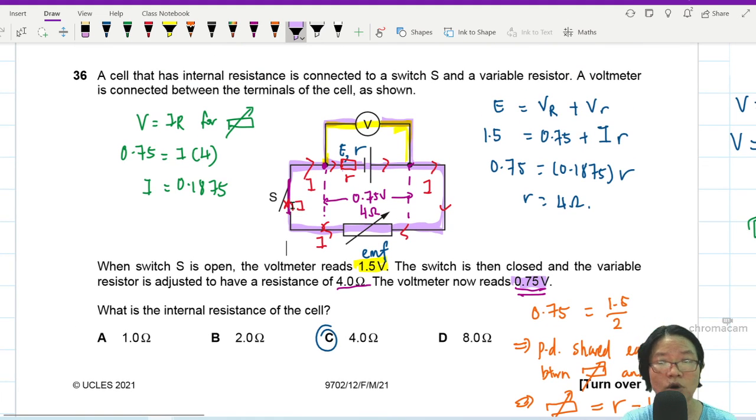All right, so that's it. You can slowly do: use the internal resistance equation, find the current, substitute inside to find the resistance. Okay, that's it for question 36.